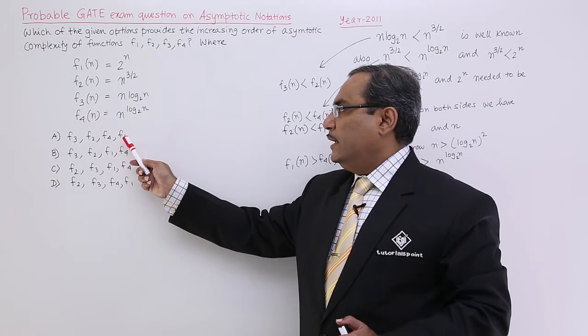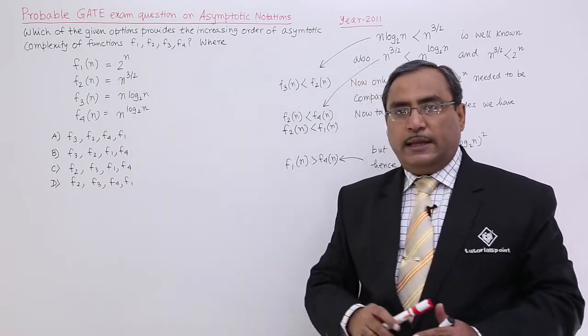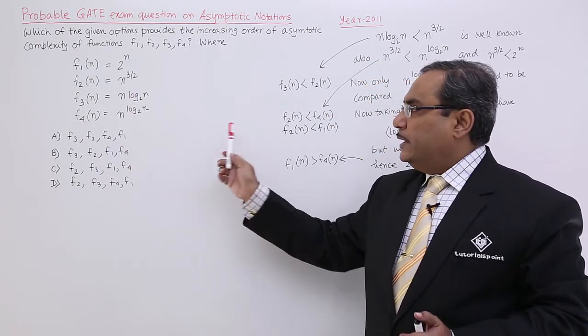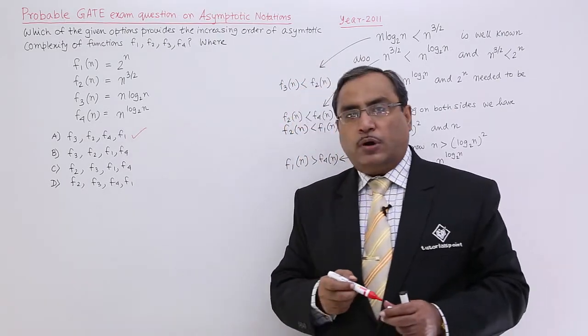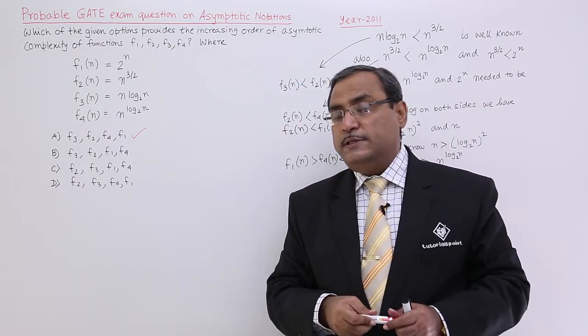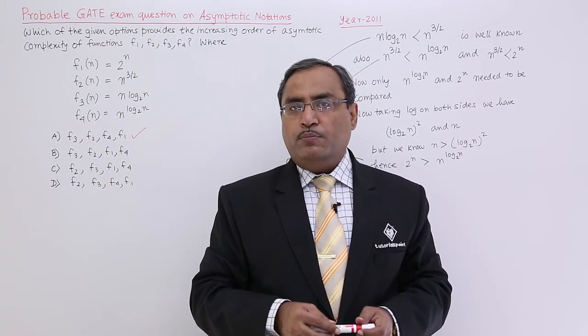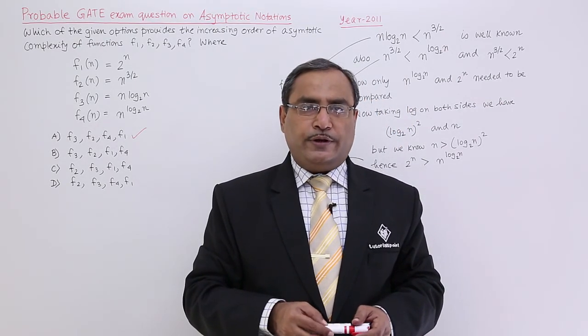f4 will come earlier than f1 as I am going to arrange them in the increasing order. In this way, I shall go for option number a. This sort of problems can easily be solved. Try to solve such problems more. Thanks for watching this video.